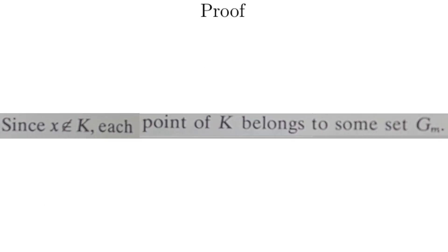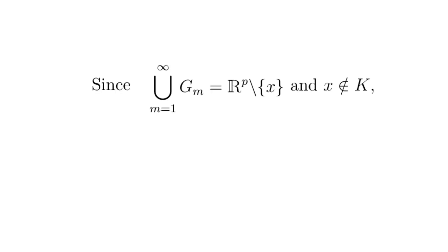Proof. Since x is not in K, each point of K belongs to some set G_m. Since the union of all the G_m's as m gets bigger and bigger is every point of R^p except x, then since x is not in K, all of K is in the union of the G_m's.